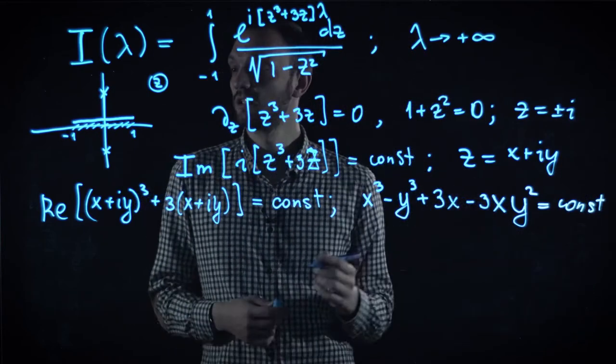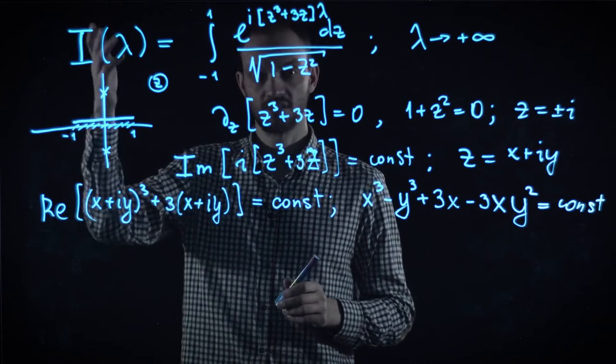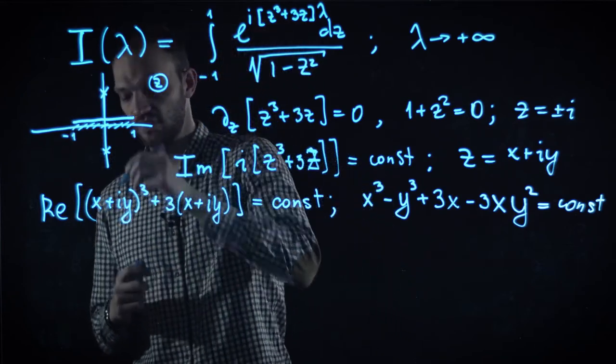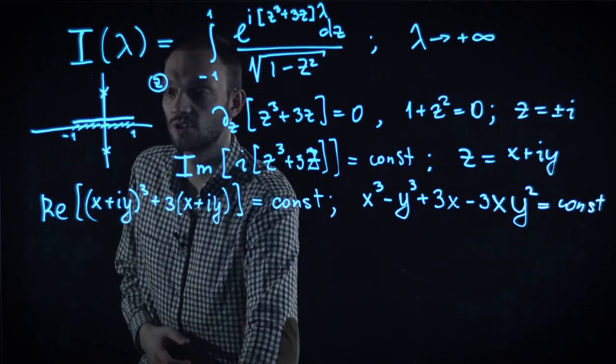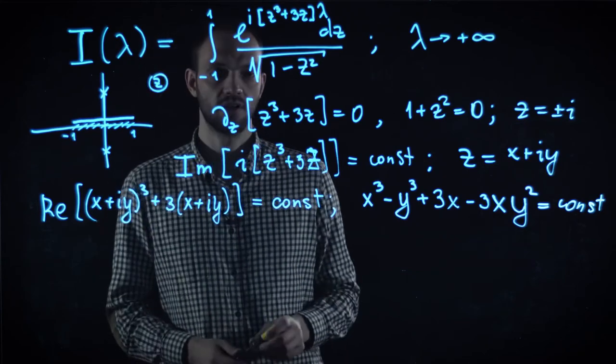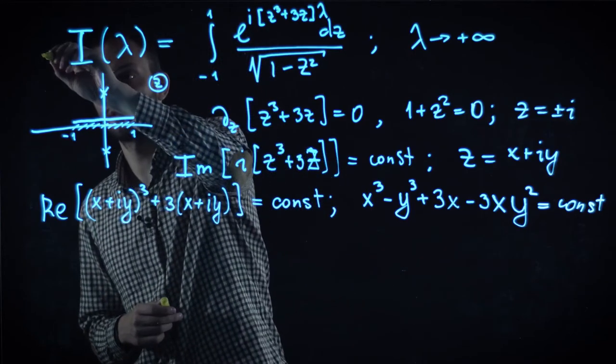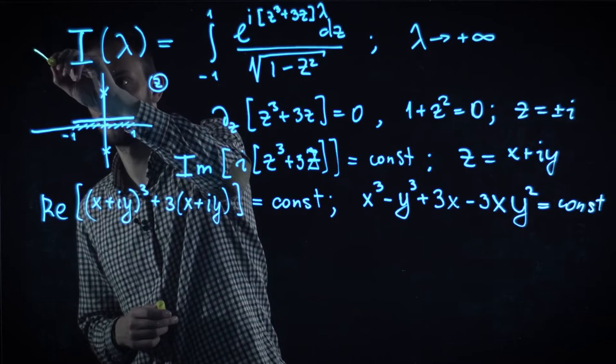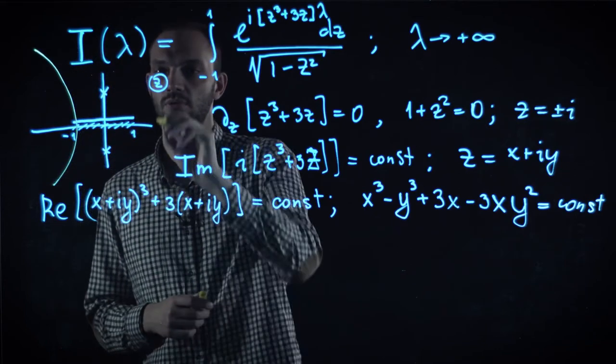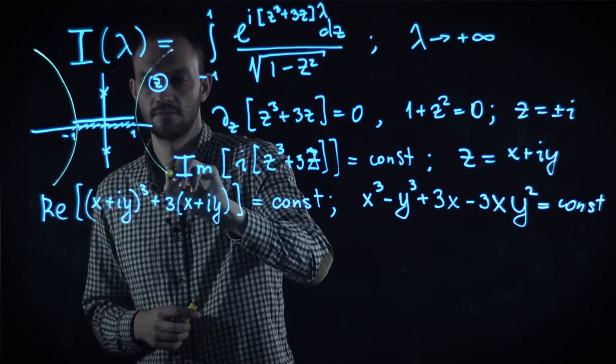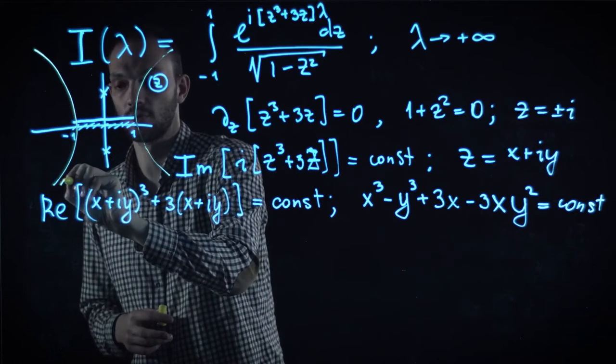And now we need to choose such lines of that class which pass through either saddle points or end points of our integration domain. And as an exercise, you can resolve this equation yourself. And let me draw just the result. And it happens that the curves of constant phase, which pass through the boundary points, behave like that. And there are also curves which pass through the saddle points.